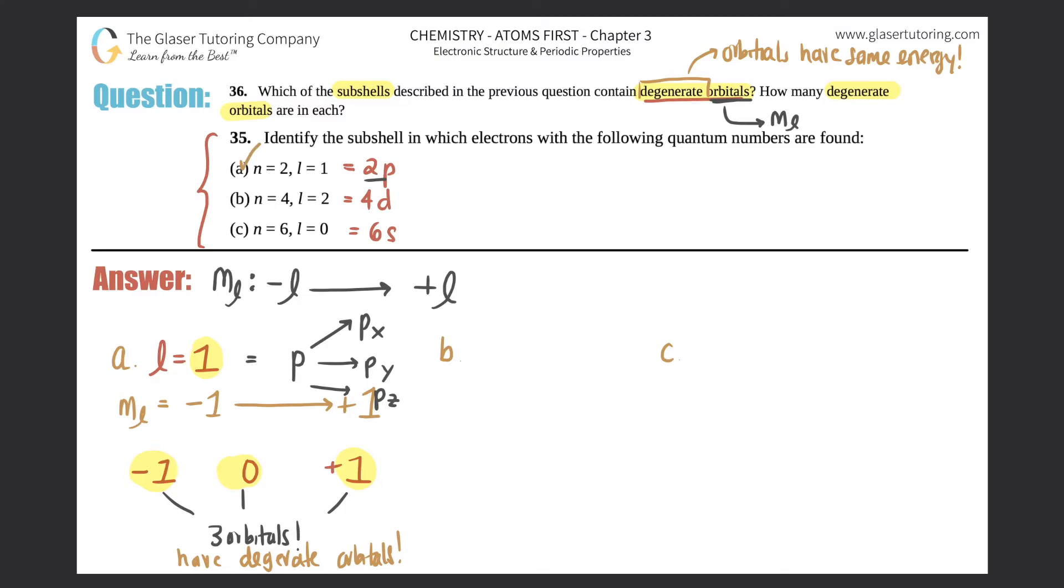Now we do the same exact thing to see if we have degenerate orbitals for b. So we have l equals 2. If we want to find the ml, it has to be from negative 2 all the way to positive 2. How many total numbers is that? Negative 2, negative 1, 0, 1, and 2. So in this case, there's 5 specific orbitals, 5 different orientations, because the ml gave me 5 different numbers. So these are 5 different orbitals. And would they have the same energy or not? They would all have the same energy.